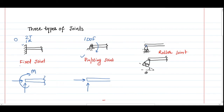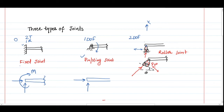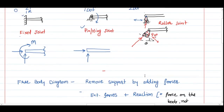The roller joint is an extension of the pin joint. It allows rotation and the rollers are free to move in a particular direction, giving two degrees of freedom. The vertical translation is constrained, so when removing the joint, the reaction is perpendicular to the plane where the rollers move. If rollers slide on an inclined surface, the reaction is perpendicular to that surface at 90 degrees.